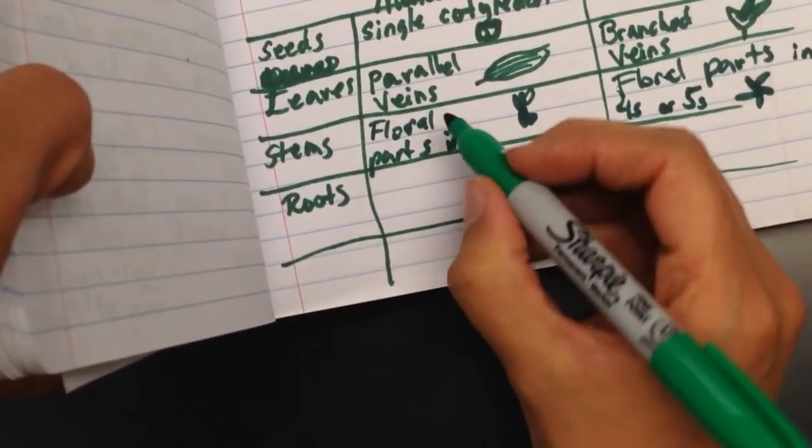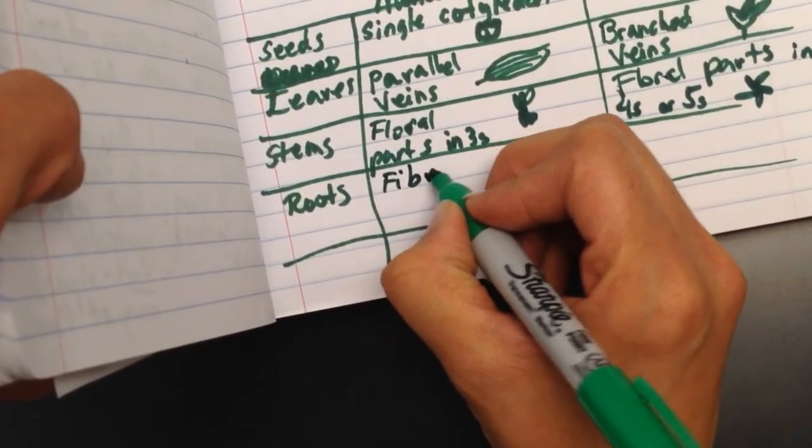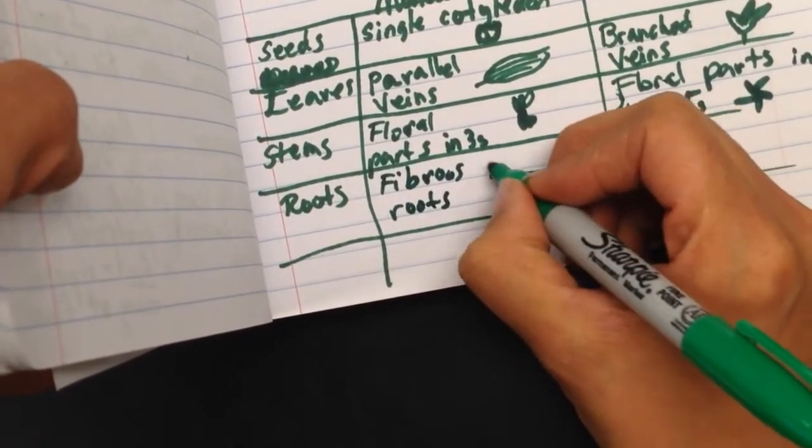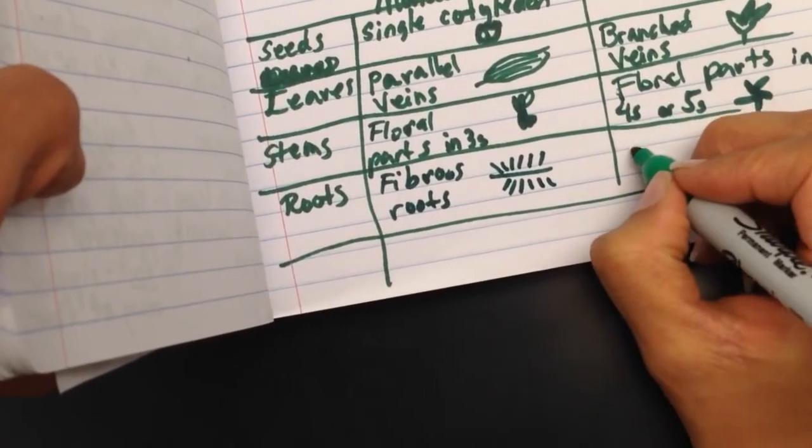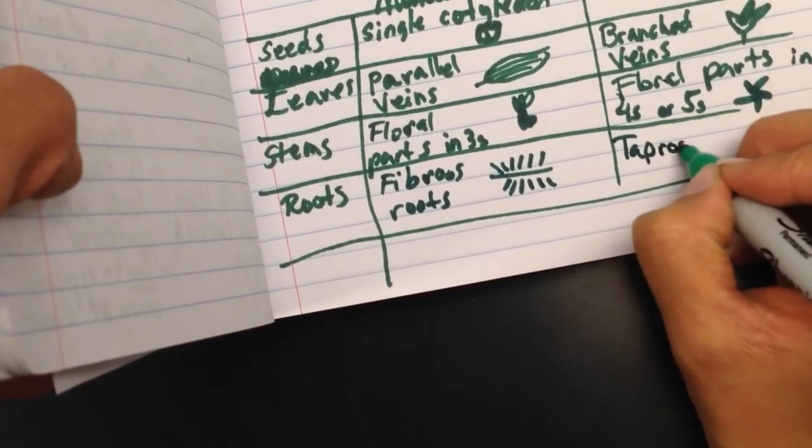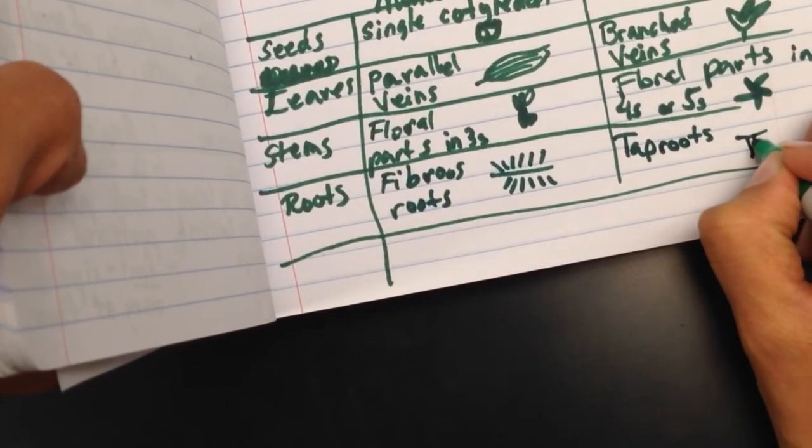you can tell by the roots. Monocots have fibrous roots, which are these little hairy, tiny little roots that kind of spread out all over the place. And dicots often have tap roots. And a great example of a tap root is a carrot.